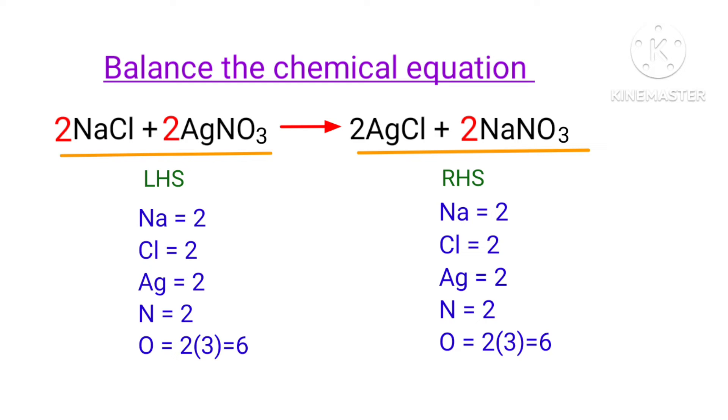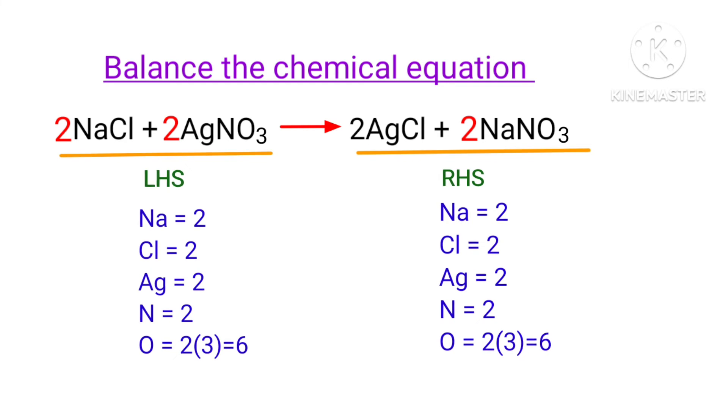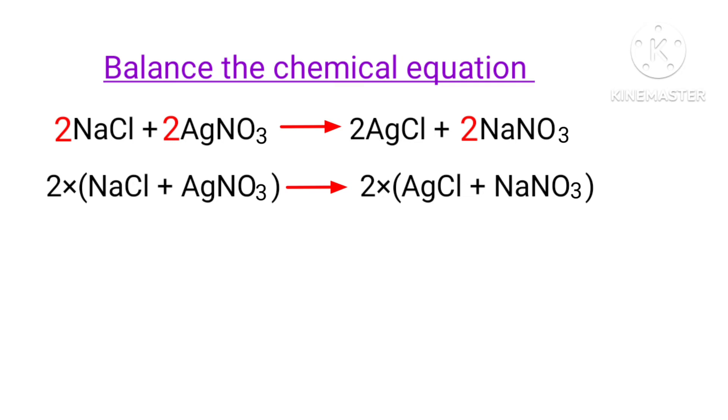The equation is now balanced. Now we can write the equation as 2 times NaCl plus AgNO3 gives us 2 times AgCl plus NaNO3.